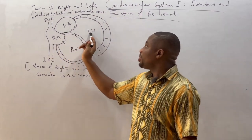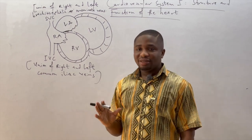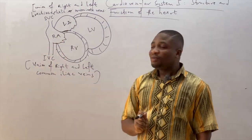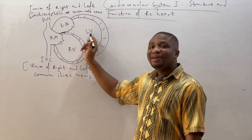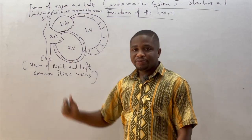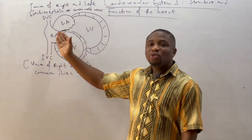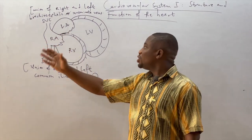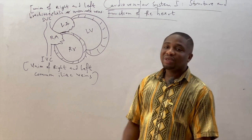The heart is made up of four chambers. What are these chambers? The chambers are two atria — that's the right atrium and the left atrium — then two ventricles, that is the right ventricle and the left ventricle. If you observe closely, you realize that the two atria usually empty their contents into the ventricles.